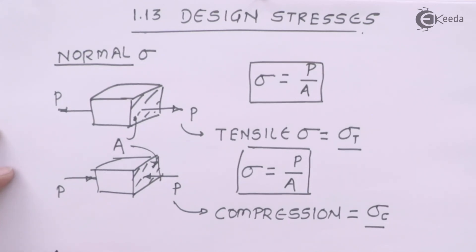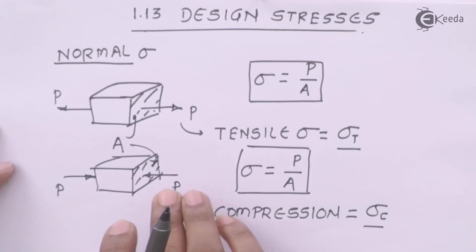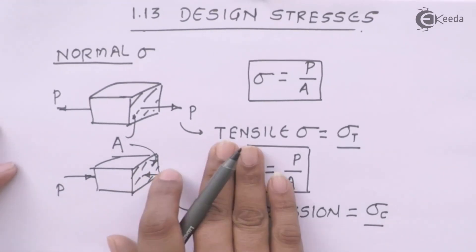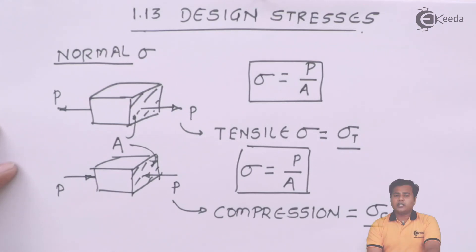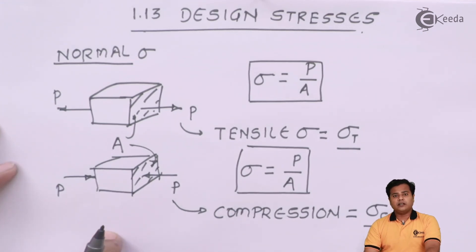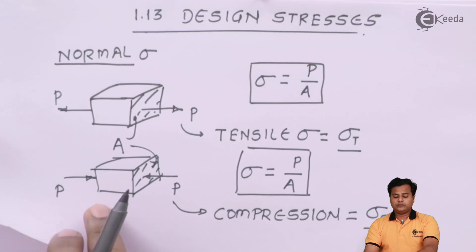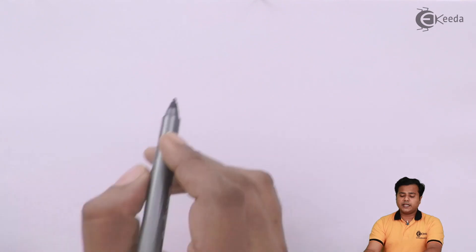The significance of these stresses is that they apply when a body is subjected to forces such that in a small part of the product the force is perpendicular to the area. In such cases we identify the product as failing under normal stresses. In the next session we are going to deal with this in detail. Let us move ahead to the second type of stress.